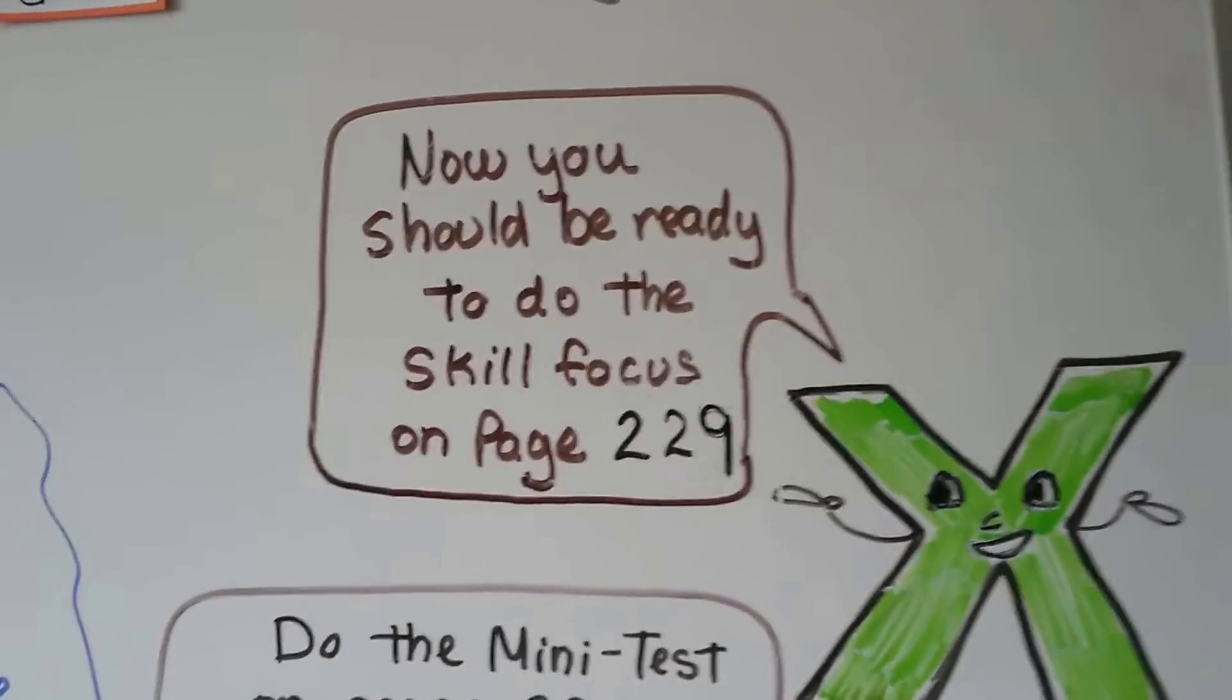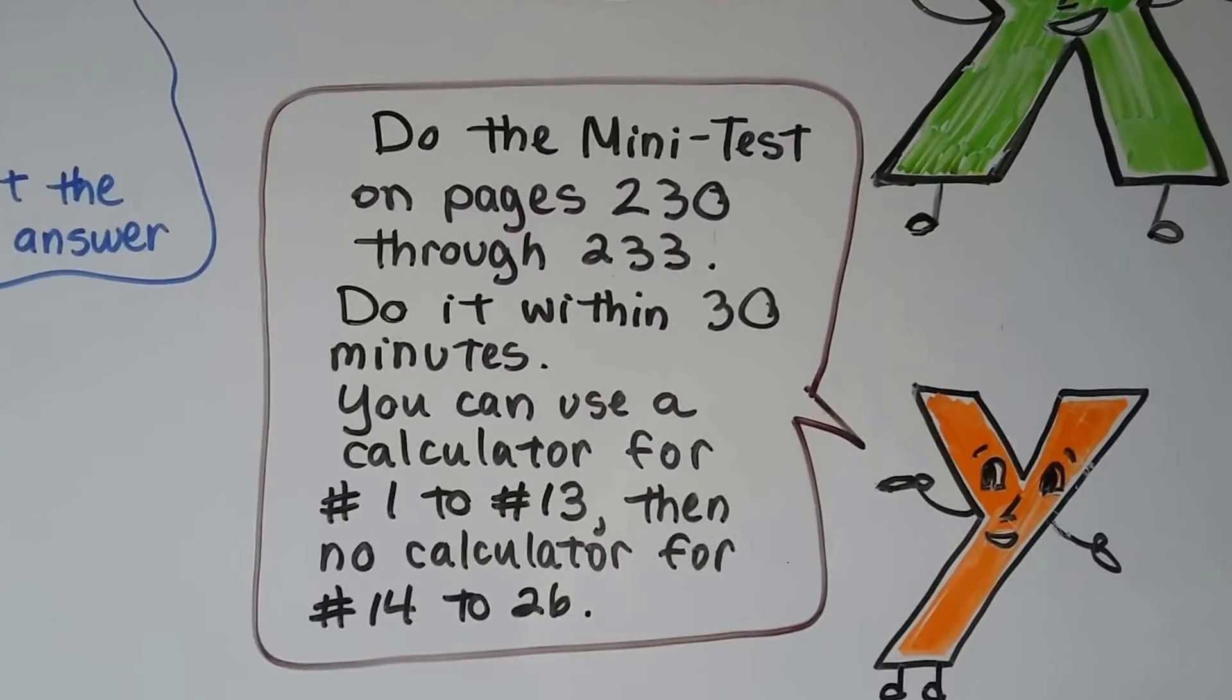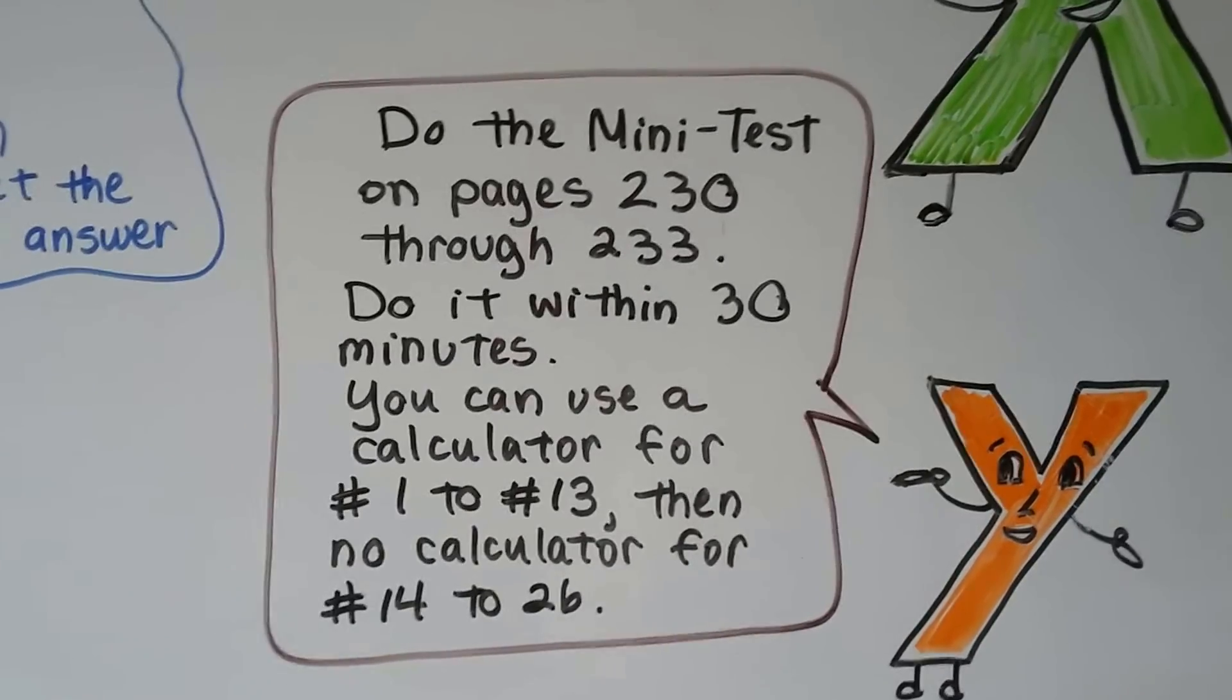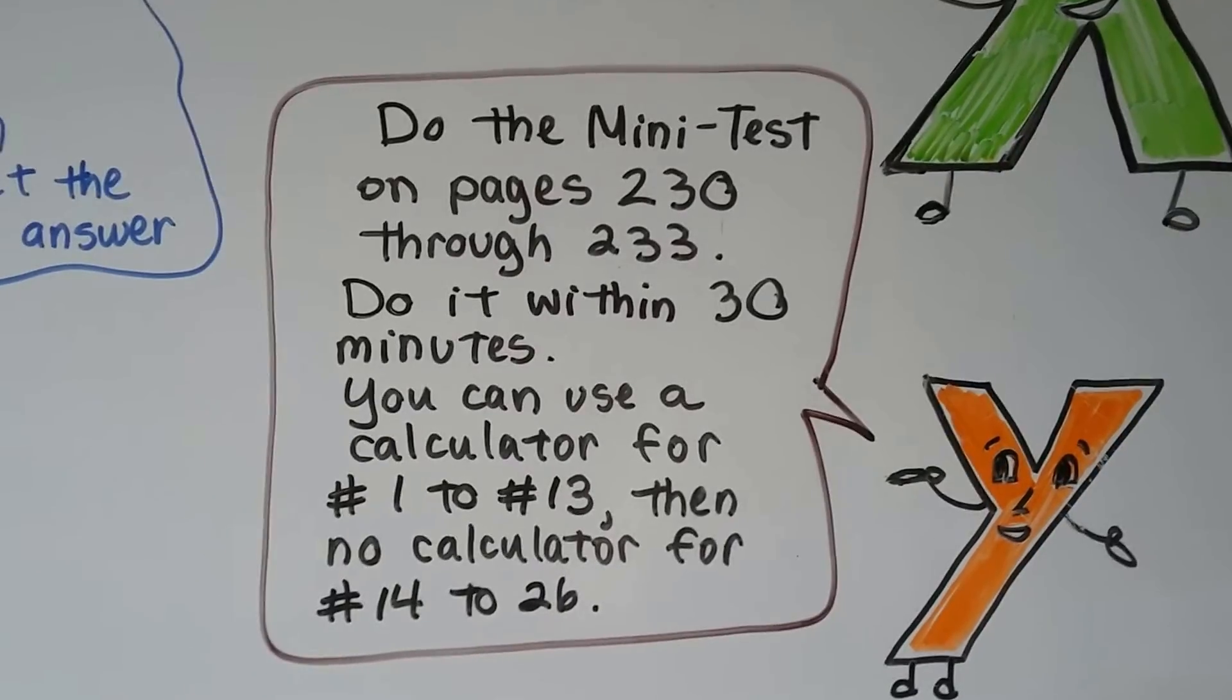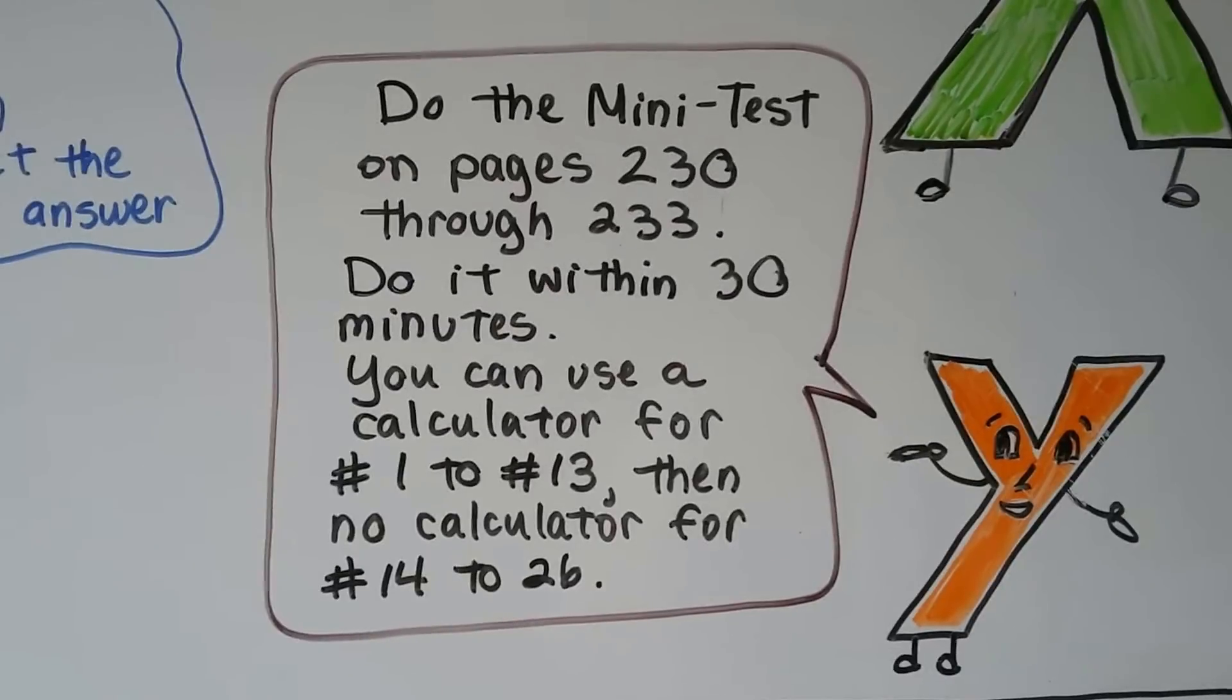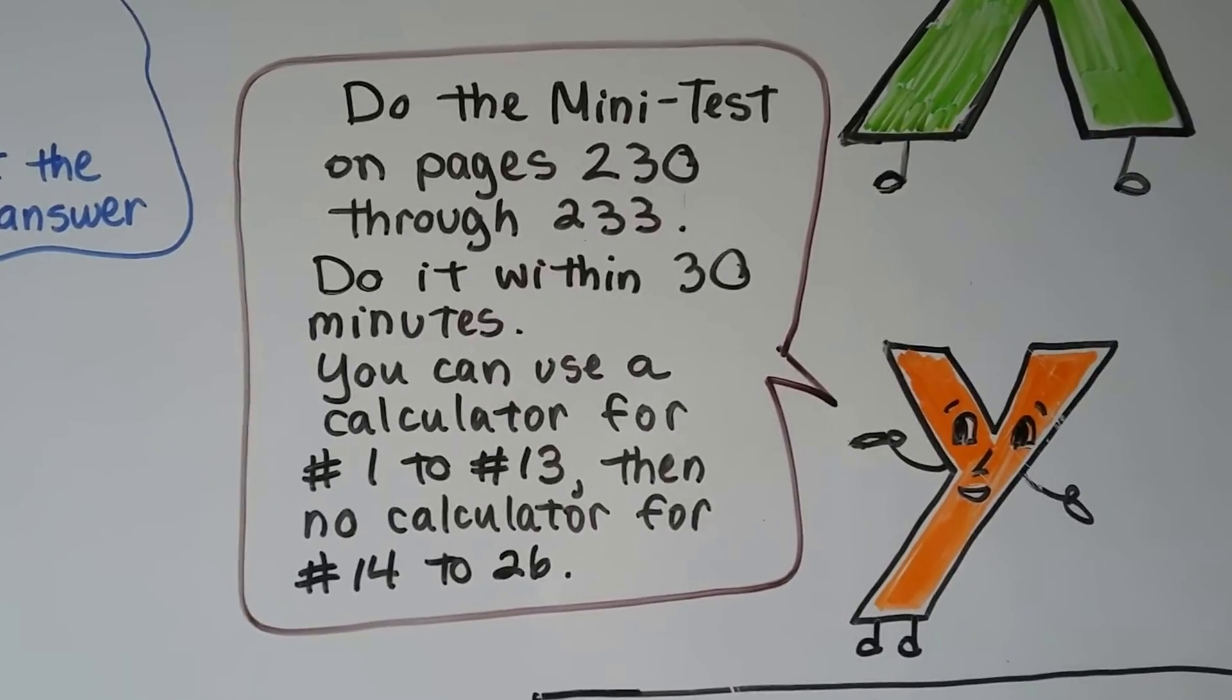So you should be ready to do the skill focus on page 229. There's going to be a lot of similar problems like the ones we did. Then after that, do that mini-test on page 230 through 233. It says to do it within 30 minutes. Try really hard to do it within 30 minutes. If you have an egg timer or a timer on your phone or on a clock, set it. So that you can see how many you can answer within 30 minutes. Wouldn't it be amazing if you got them all done in 20 minutes? Well, then that tells you you'd do well on the GED test. Now it says you can use the calculator for numbers 1 through 13. But then there's no calculator for 14 through 26. Try to do it the way they're saying it because that's how the test is going to be for real. And you want to see how you're going to really do in real life. So try to follow their directions and see how well you do.